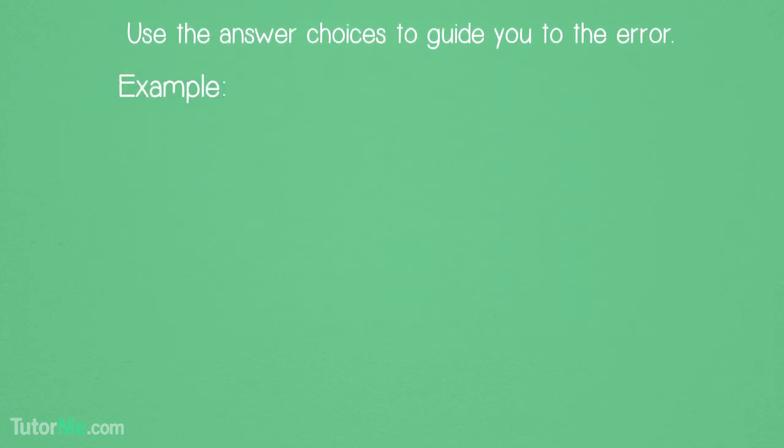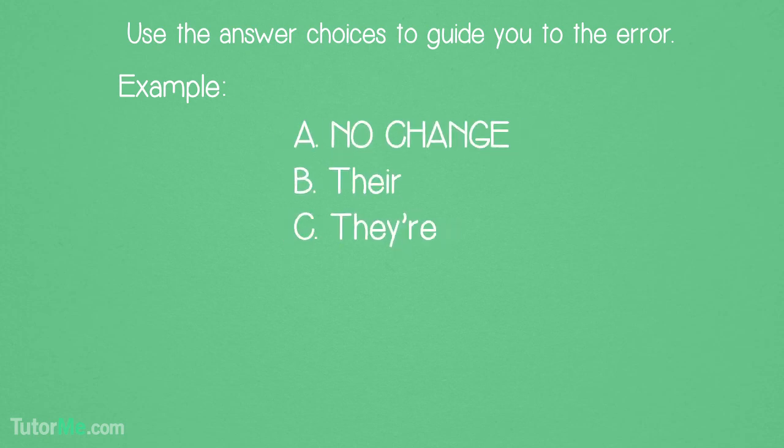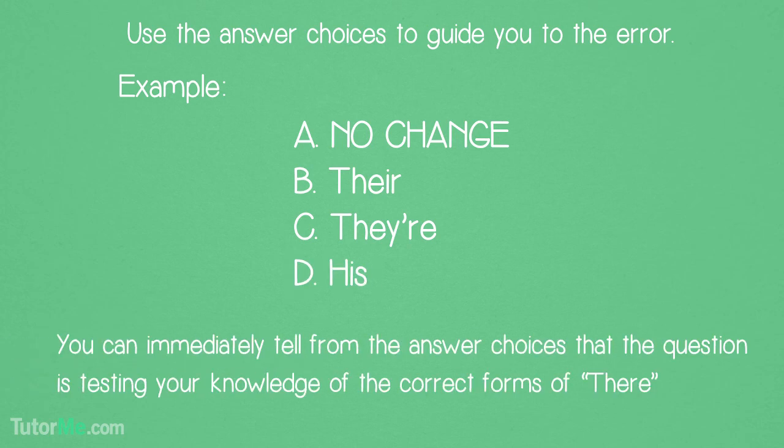For example, if the answer choices to a question are: a, no change; b, there; c, there; d, his - you can immediately tell from the answer choices that the question is testing your knowledge of the correct form of there.